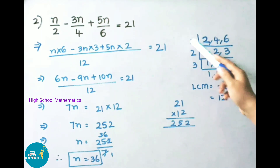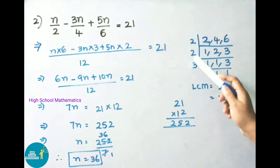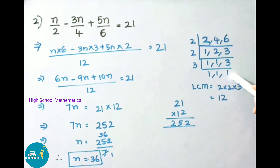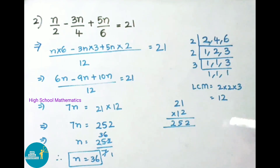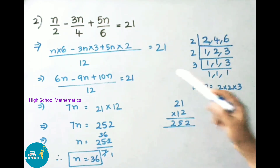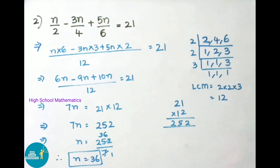Using the 2 times table: 2×1=2, 2×2=4, 2×3=6. Again 2×1=2, and 3 remains as is. Then 3×1=3. So LCM is 2 × 2 × 3 = 12. Therefore LCM value is 12, and we write 12 in the denominator.